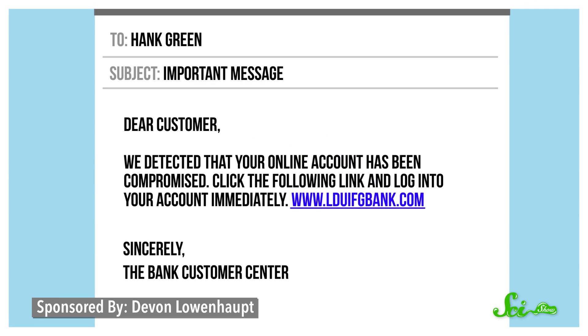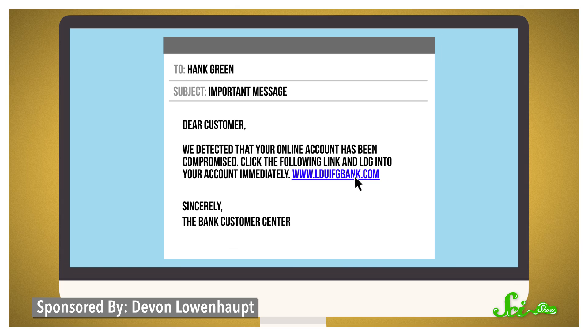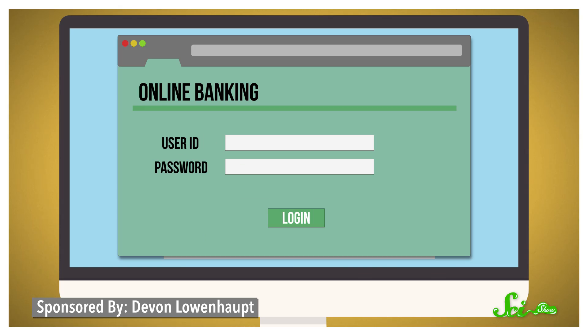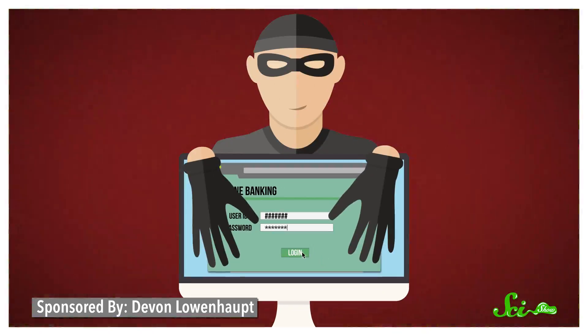If an email looks like it's coming from your bank, and it says that your account has been compromised, you're much more likely to click on the link in the email to log into your account. When you click the link, this kind of phishing attack might take you to a website that looks exactly like your bank's homepage. You enter your username and password, and now the attackers have your login information to your bank account.